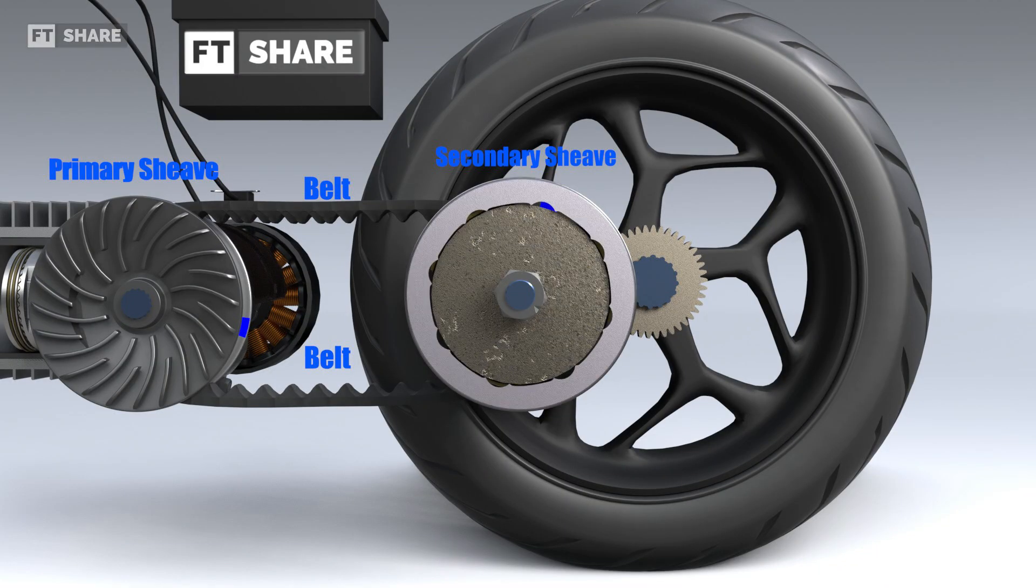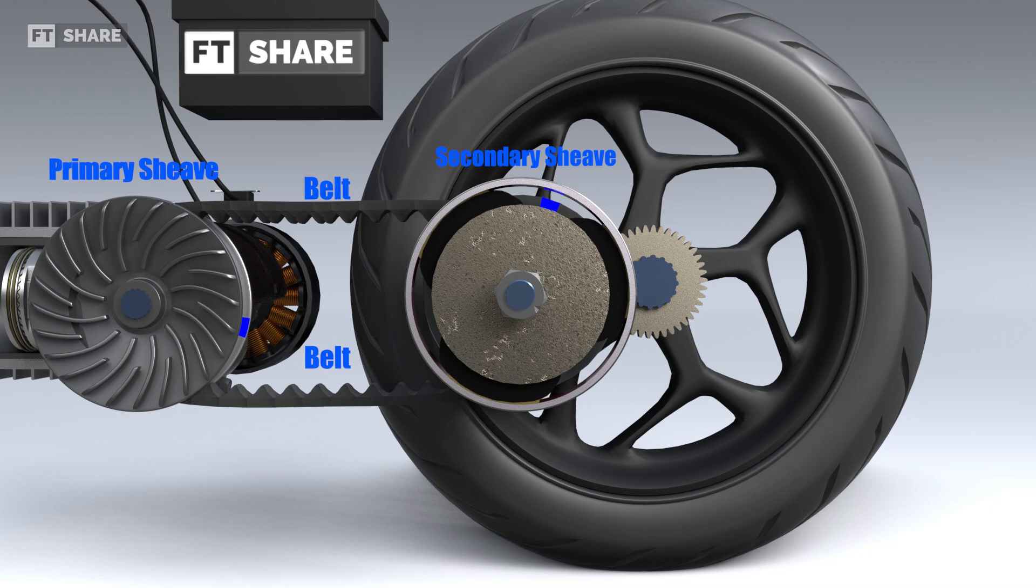But it doesn't stop there. This transmission system also includes a centrifugal clutch assembly that functions to disengage and engage the rotation generated by the engine to the wheel.